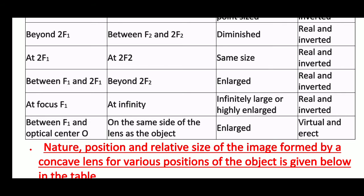The last condition is when the object is between f1 and optical center O. The image will be on the same side of the lens as the object, meaning towards the left side of the lens. The size will be enlarged, and the nature will be virtual and erect.